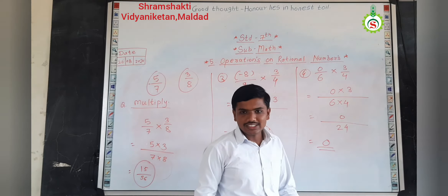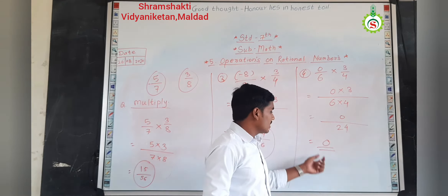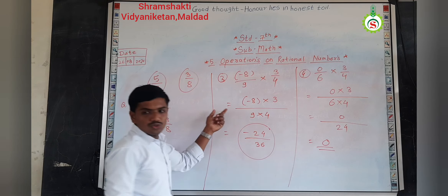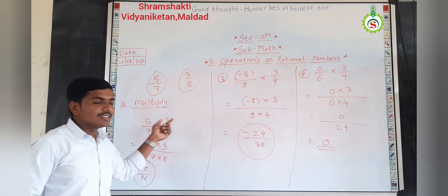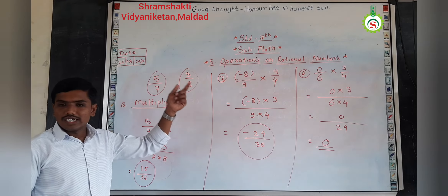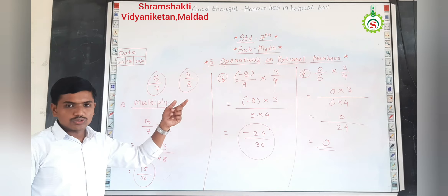But, if any number is multiplied by zero or divided by zero, the answer will again be zero. That means, here the answer is zero. And then zero is not rational. That means, like that, we can solve the multiplication of the rational number.